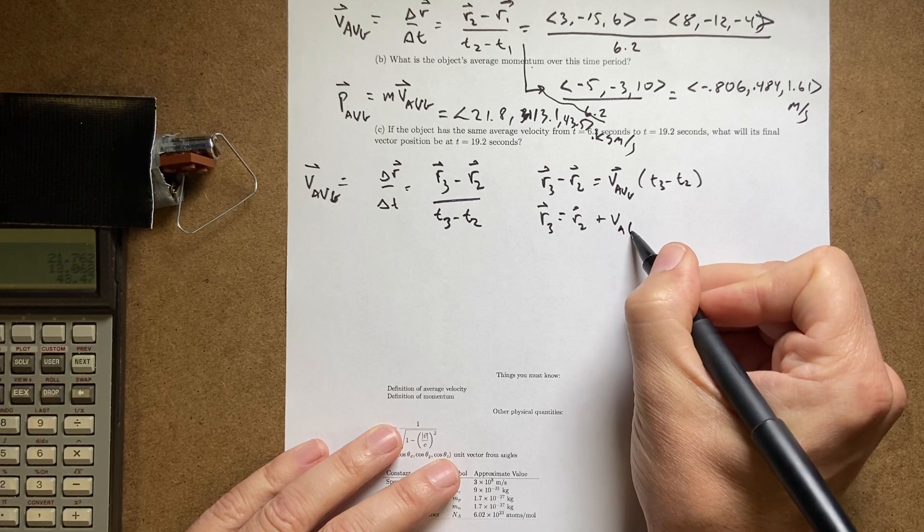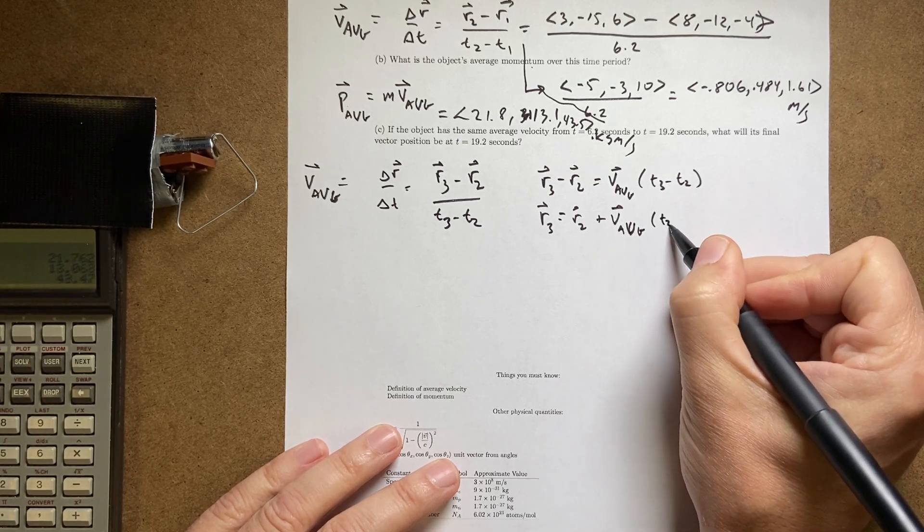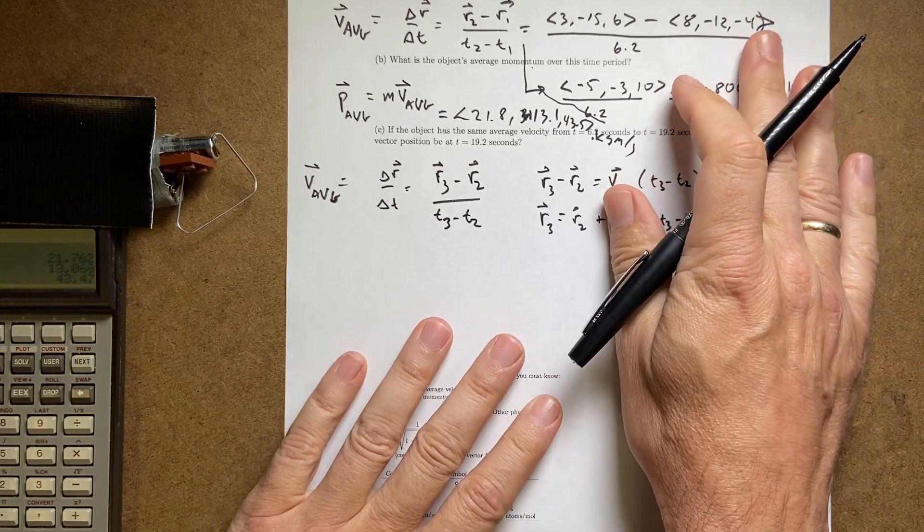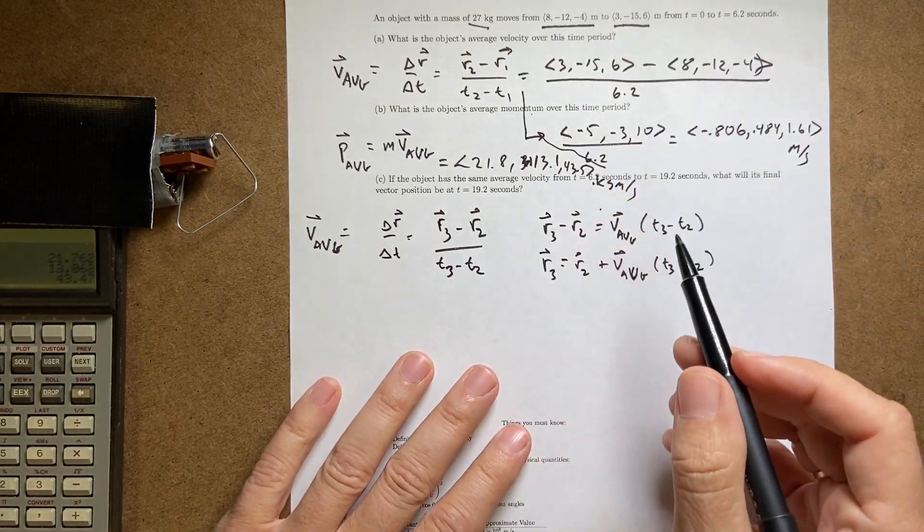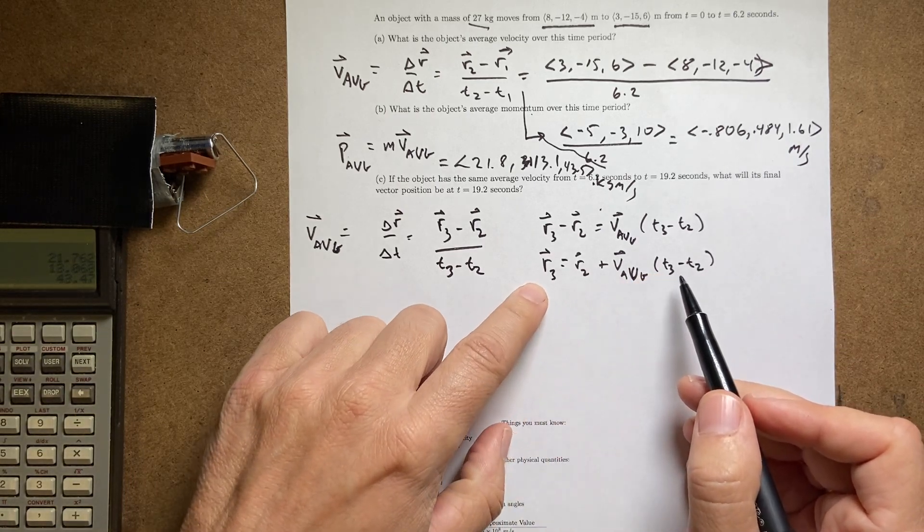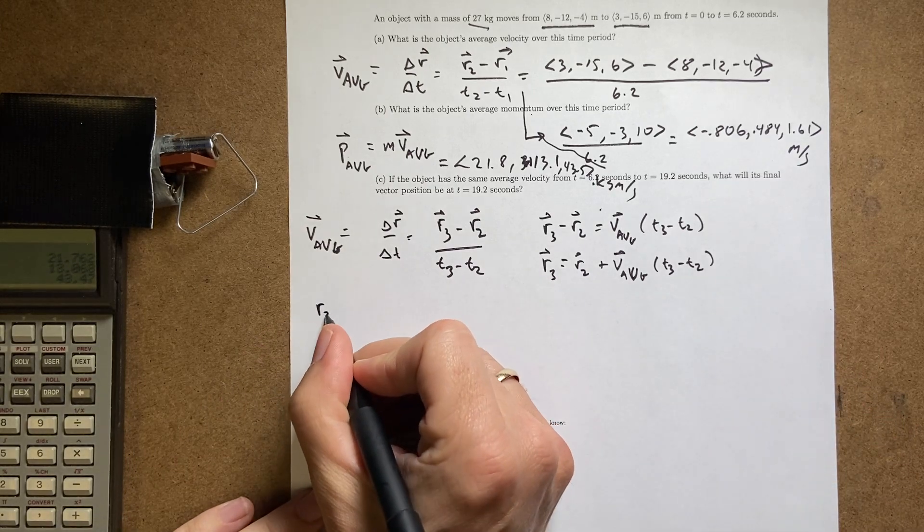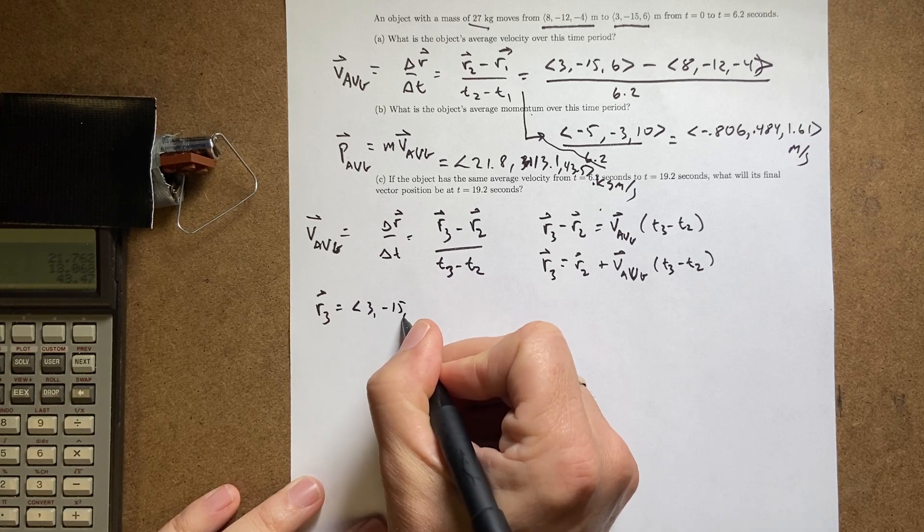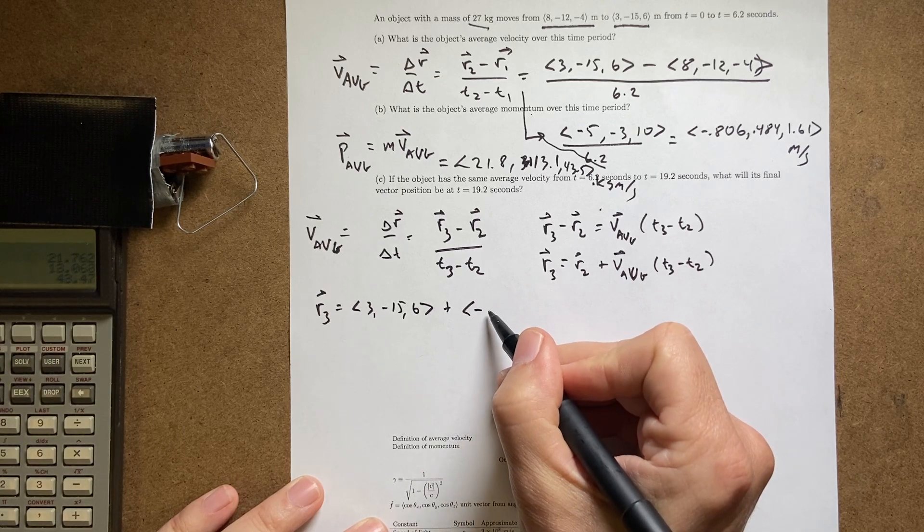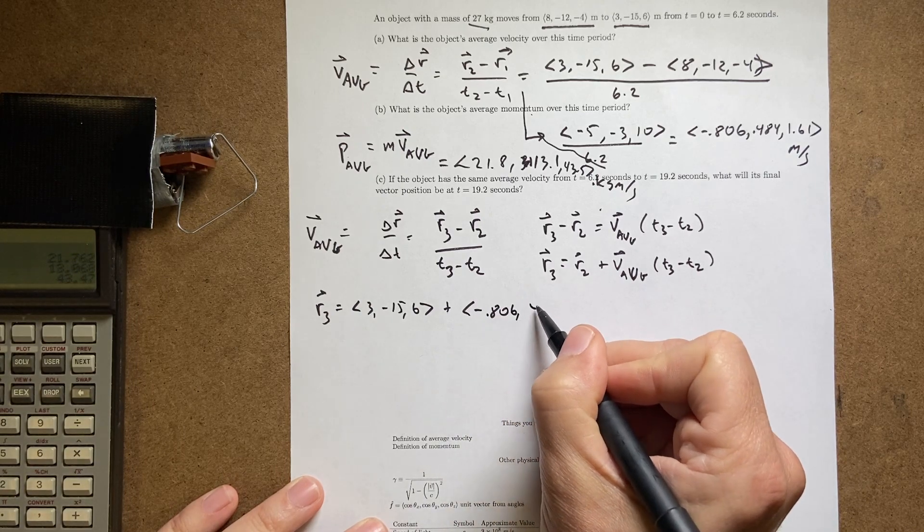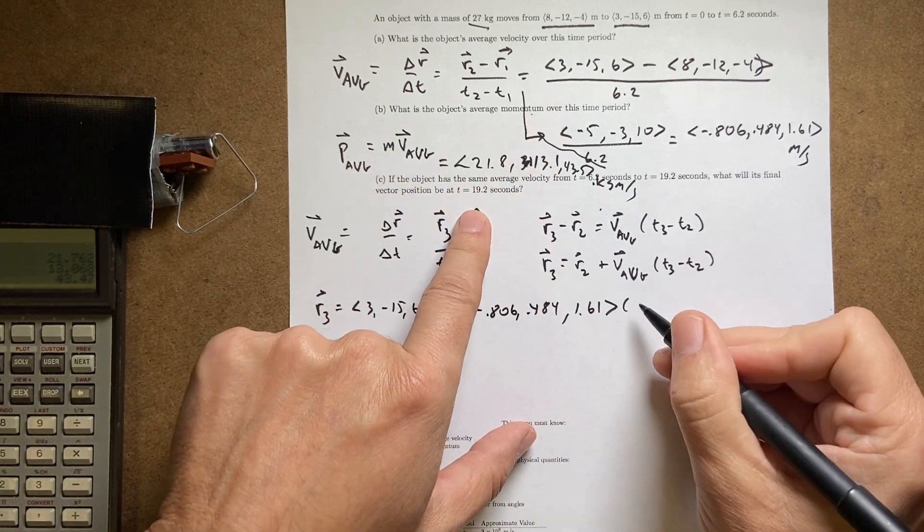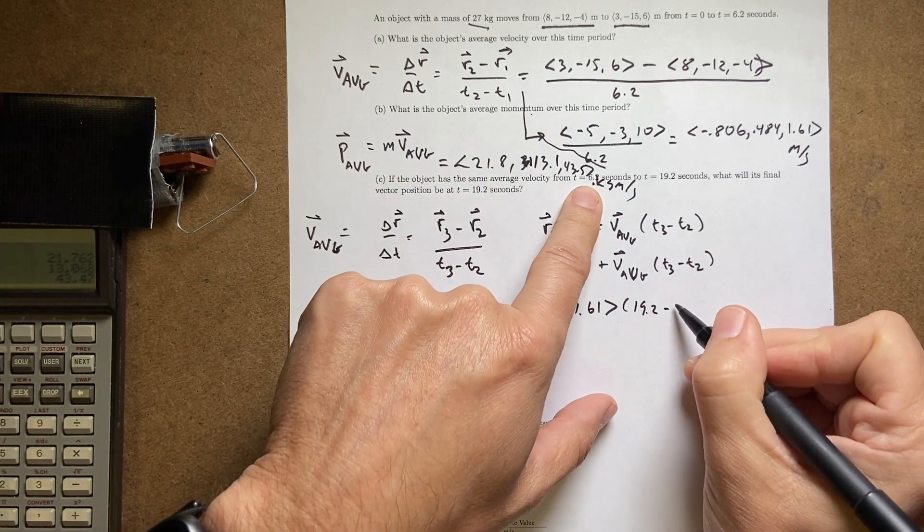So if I know the position at time 2, which I'm going to use as this 3, negative 15, 6 meters, which I do. And I know the change in time, which I do. I can find the final position. So let's just write that out. R3 equals R2, which is 3, negative 15, 6, plus the average velocity, which is this vector: negative 0.806, 0.484, 1.61 times the change in time, which is going to be 19.2 minus 6.2.